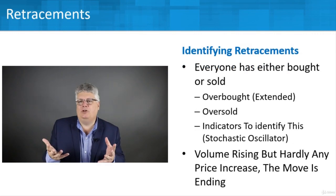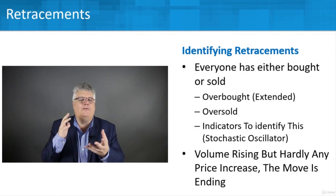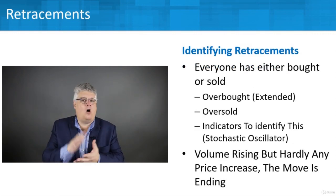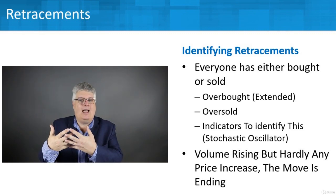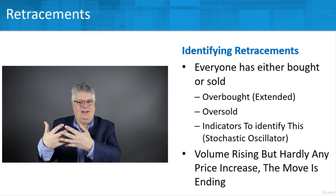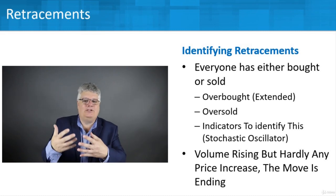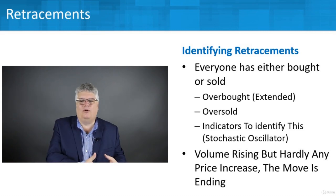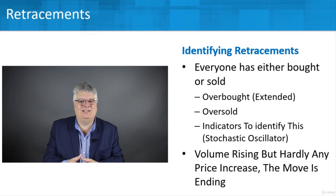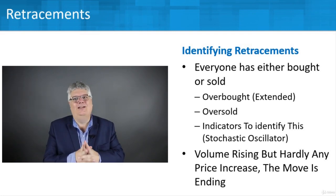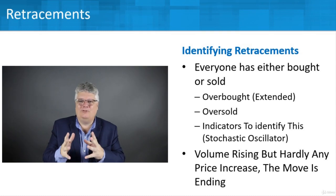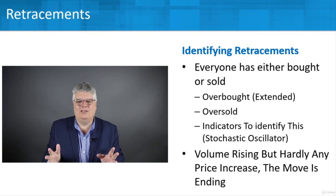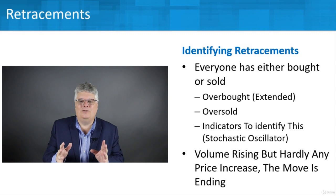Sometimes retracements happen because everyone has already bought or sold — an overbought situation where everyone who wanted to buy has already bought, so price pulls back naturally. Same thing if something's oversold. We have tools to help identify this, including the stochastic oscillator, along with other indicators we'll be learning about.